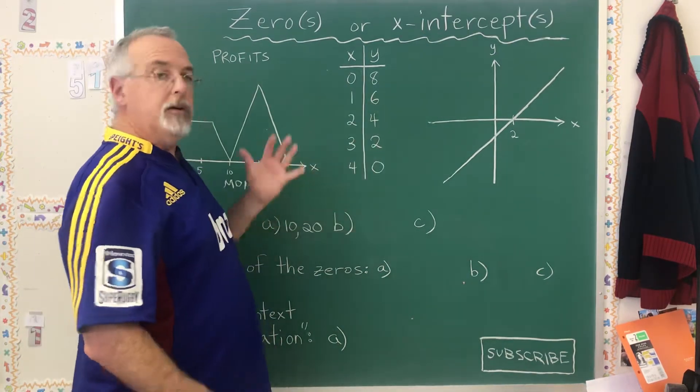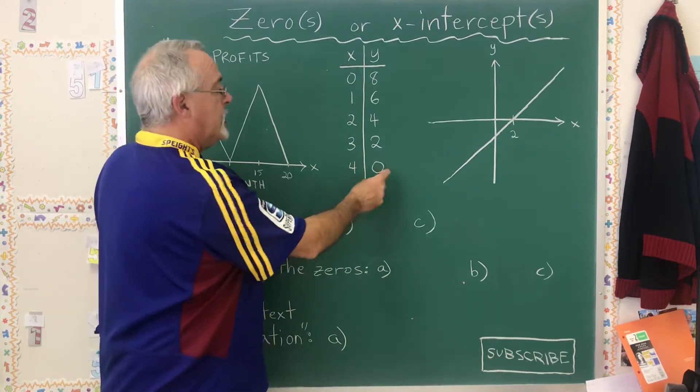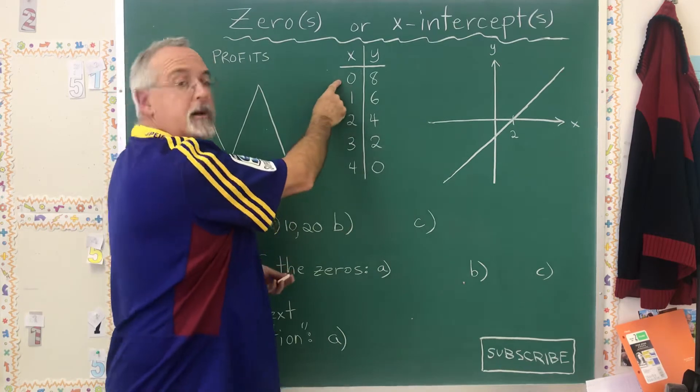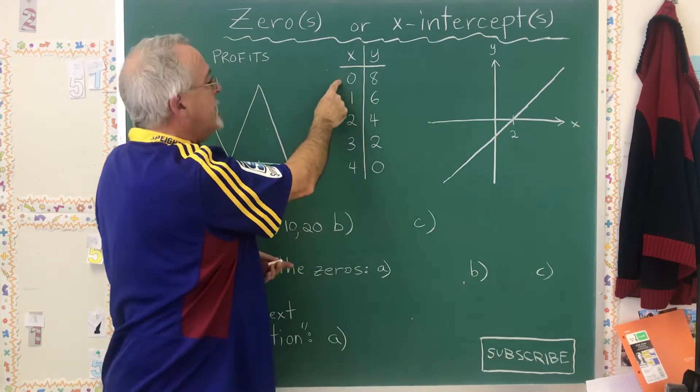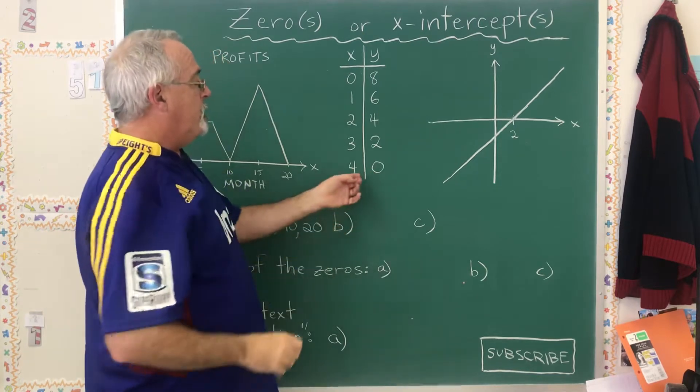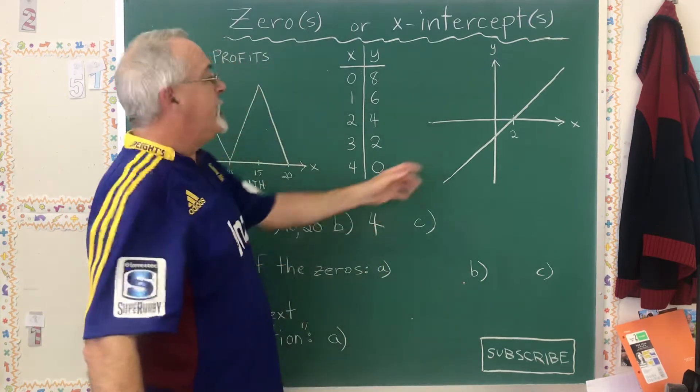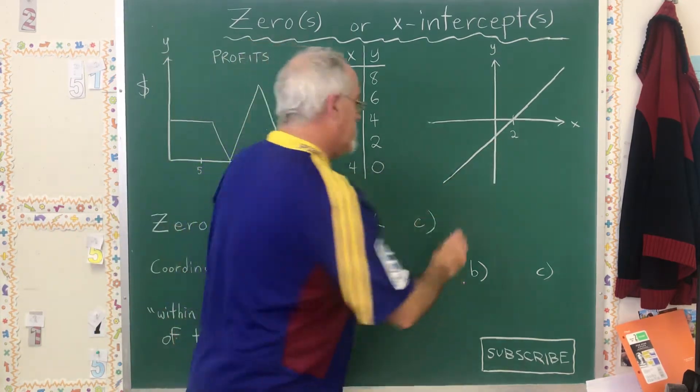In a table of values, you don't have a picture to look at, but the x-intercepts will always be the points where the y-coordinate is zero. That means this is not a zero. It's a y-intercept. But we're being asked for a zero and x-intercept. This is the answer. It's the point 4, 0, but they asked for the x-intercept, and that is four. Here, the x-intercept is two.